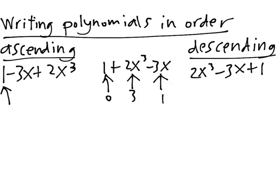Now, for the ascending order, the degrees read 0, 1, and 3 from left to right, which is in increasing order. And for the descending order polynomial, they are 3, 1, and 0 from left to right.